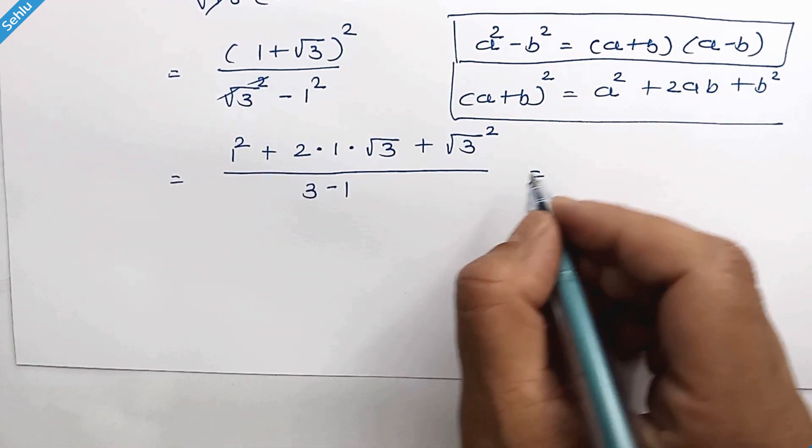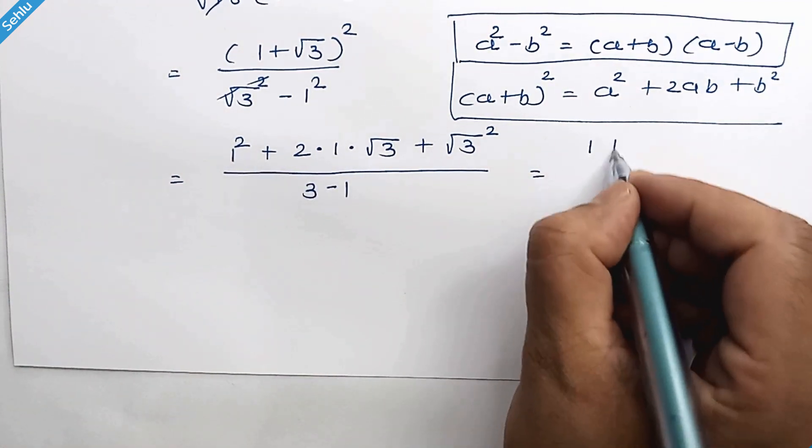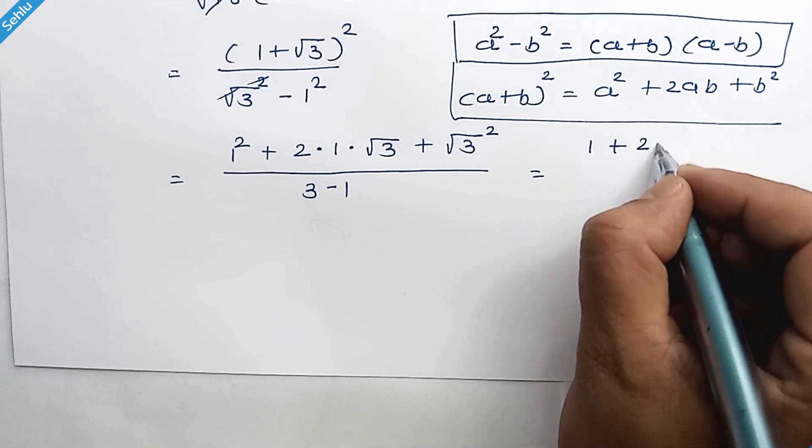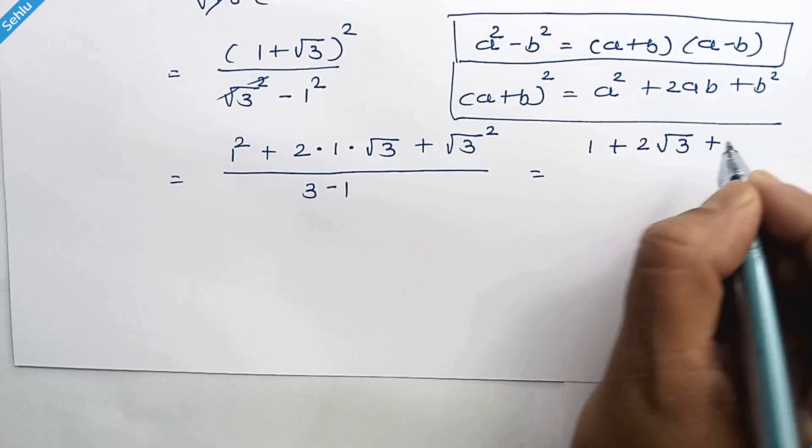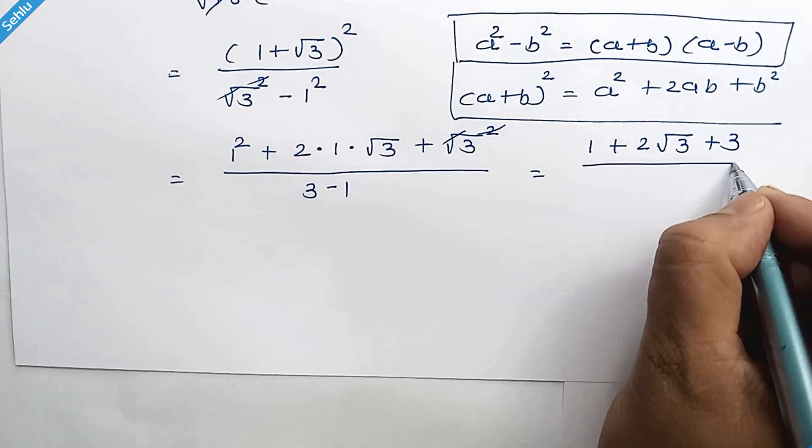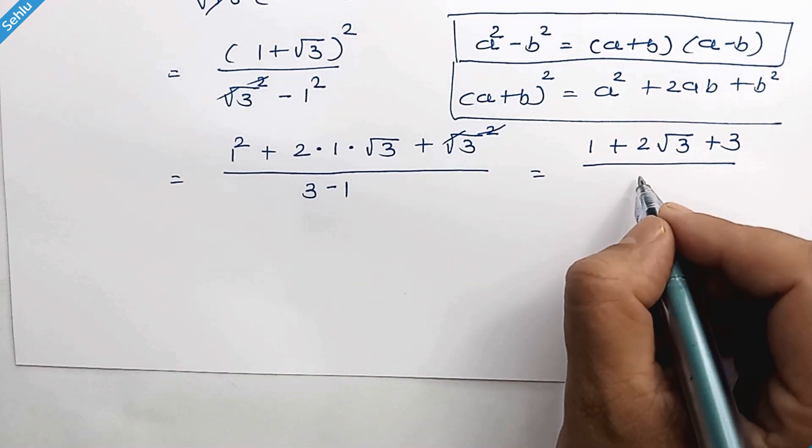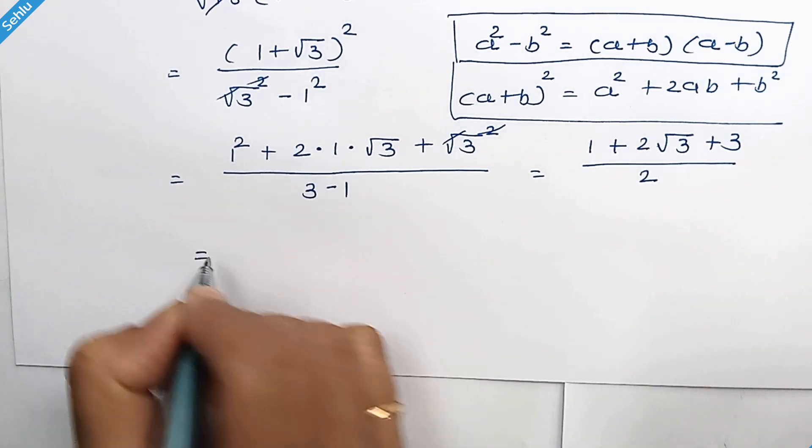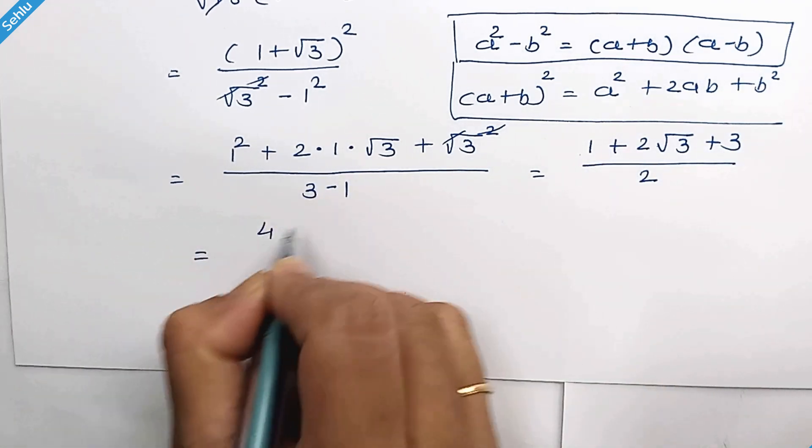So it will be 1 squared is 1, plus 2 times square root of 3, plus 3. In the denominator, 3 minus 1 is 2. So 1 plus 3 is 4.